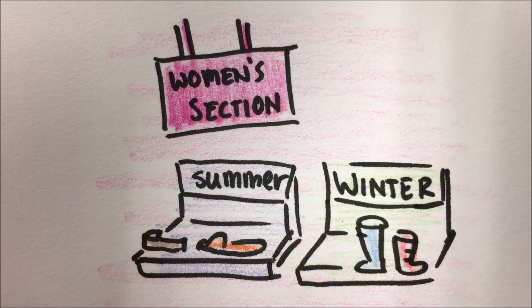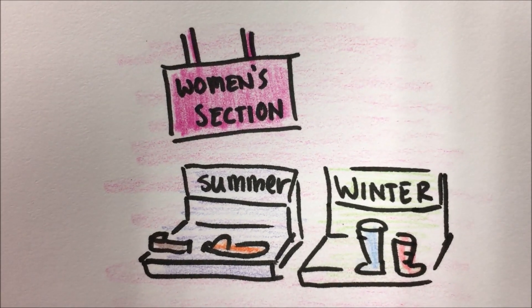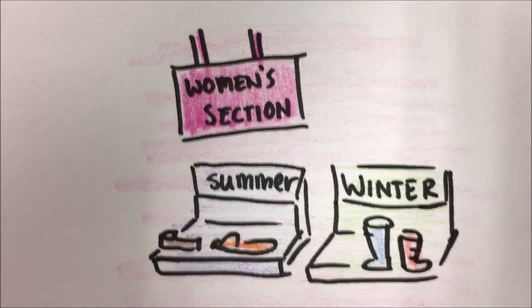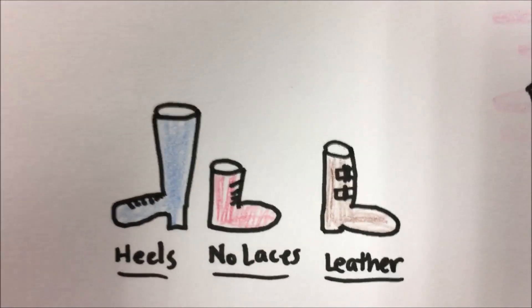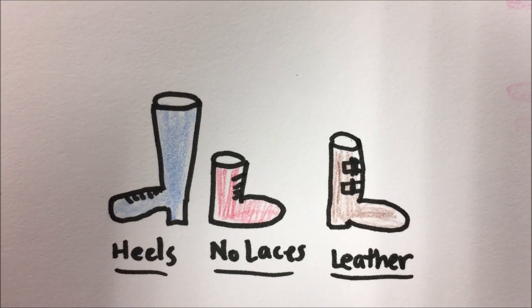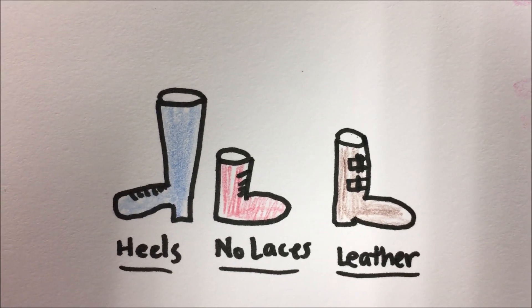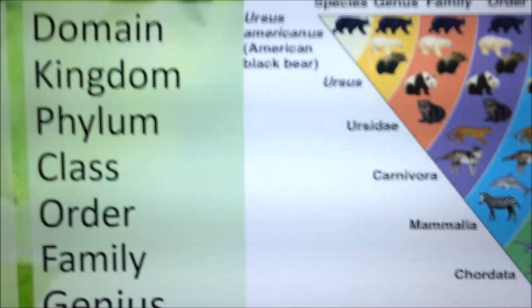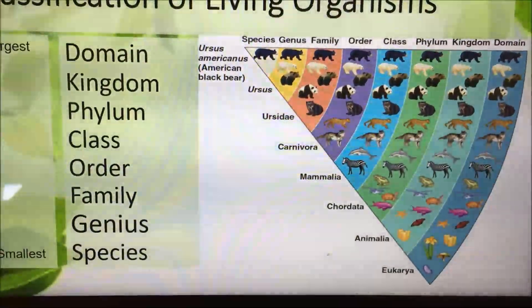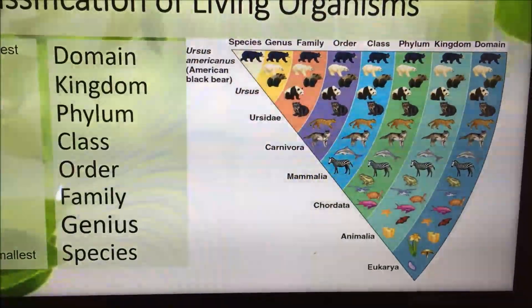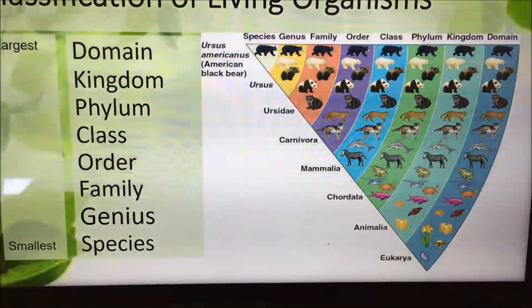Just like animals, we can be even more specific. From domain we go off to kingdom, then phylum and class. Say we go down to just winter shoes and we're looking for boots specifically — there's heels, no laces, leather. As you can tell, we can get very specific to each animal, and that helps us because we can find new species, find mutations, and see changes within its own species. Domain is going to include everything, and as we get further down the list, we get more specific.